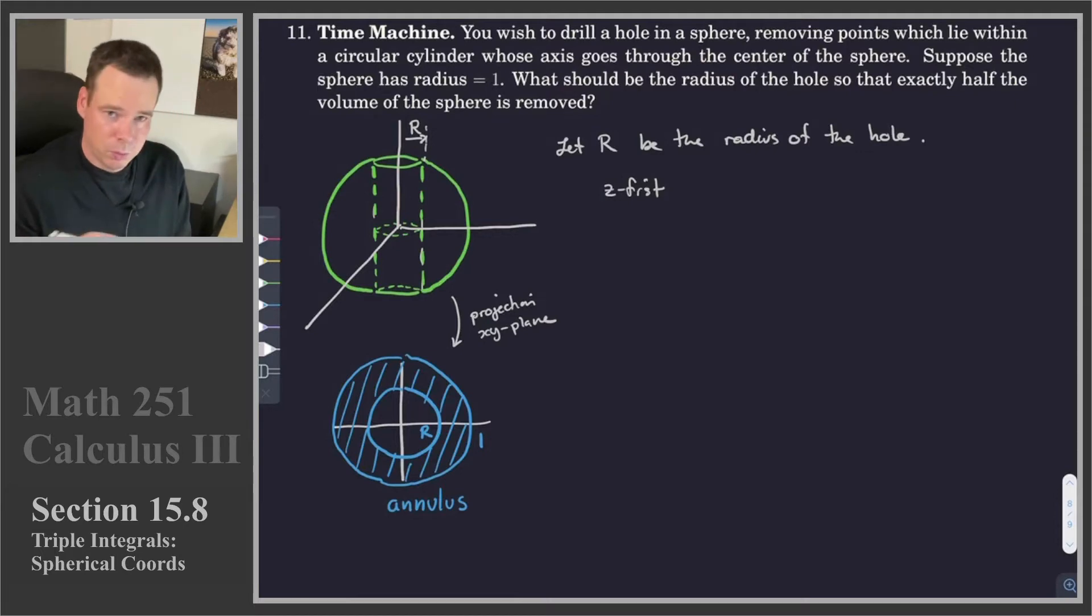Rho changes depending on the angle phi. So I need to try to figure out how to describe that cylinder in terms of rho and phi. That seems to be too much of a problem, because the cylinder itself is very simple to describe in cylindrical coordinates. And the sphere itself is not so bad in cylindrical coordinates. So because of the presence of the cylinder, I'm thinking cylindrical coordinates is the way I'm going to go.